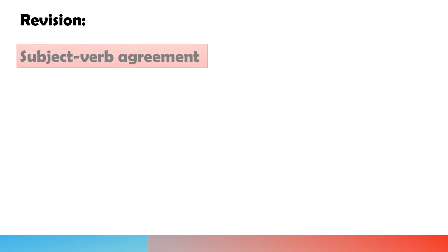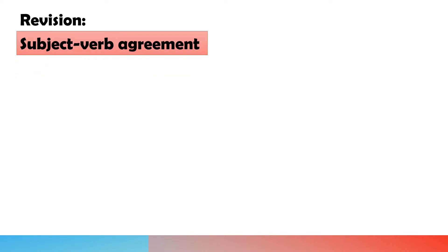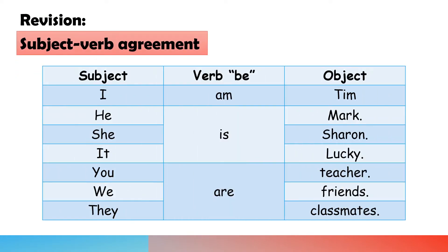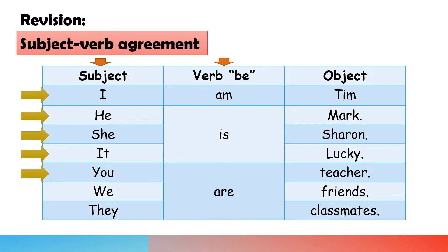Revision: Subject-Verb Agreement. I am. He is Mark. She is Sharon. It is Lucky. You are teacher. We are friends. They are classmates.